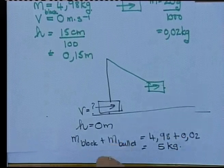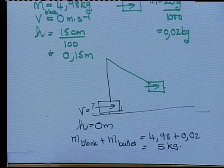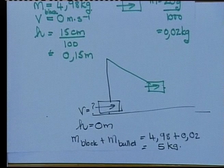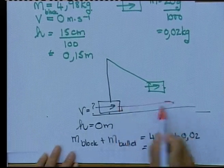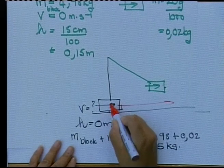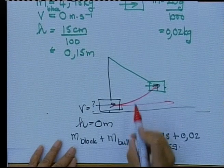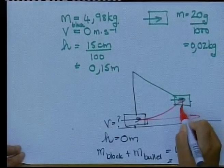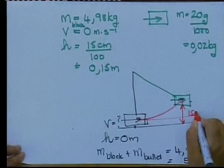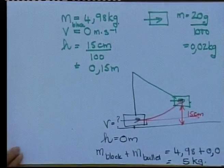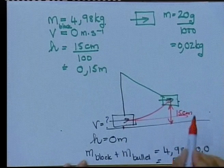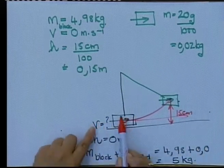We cannot use equations of motion in this example. Equations of motion are only used if something is moving in a straight line. What is happening here is that the bullet-block system is moving in a curve, and as soon as something curves, you cannot use equations of motion — you must use energy principles. So we are going to use energy principles to calculate the velocity of the block and bullet moving from a height of 0 to a height of 0.15 meters.